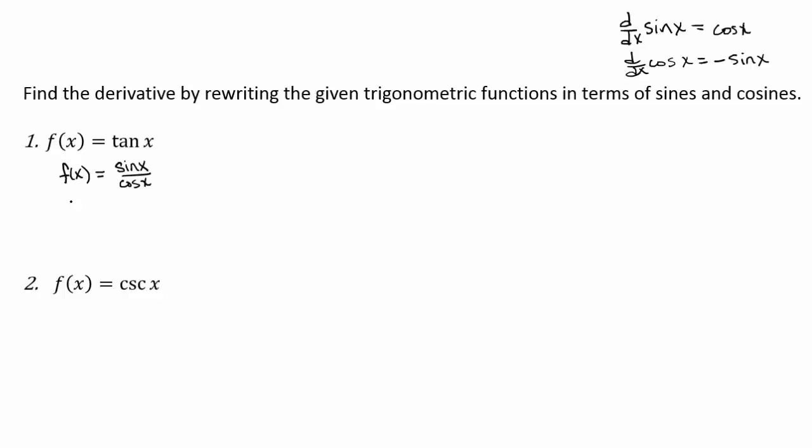So the rule for finding the derivative of f is we're going to take bottom d top minus top d bottom over bottom squared. And we know the derivative of the top and the bottom, right? So we're good to go.